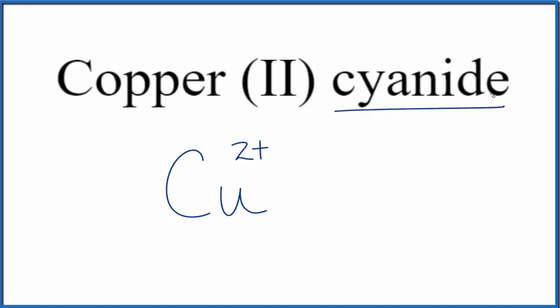We need to look that up on a table of polyatomic ions, if we're allowed, or just memorize that the cyanide ion is CN, and the whole thing has a charge of 1 minus. So this 1 minus is for the whole cyanide ion.